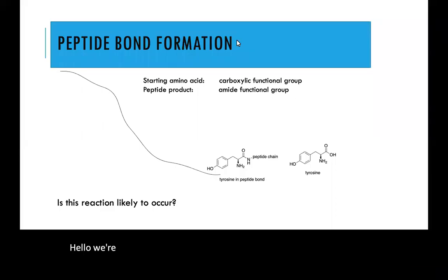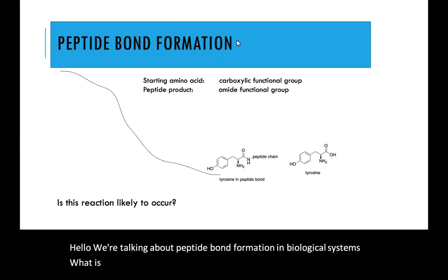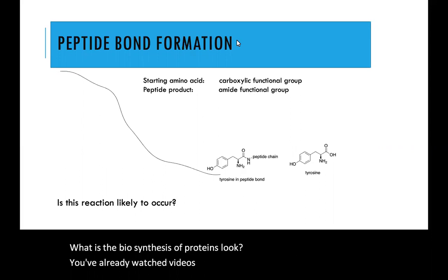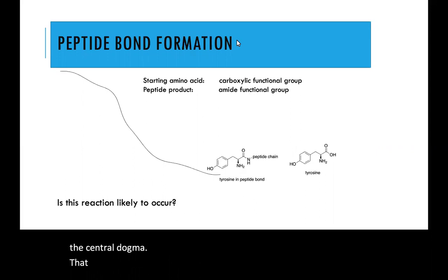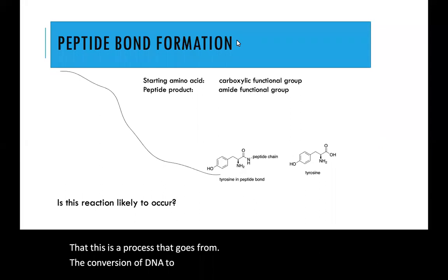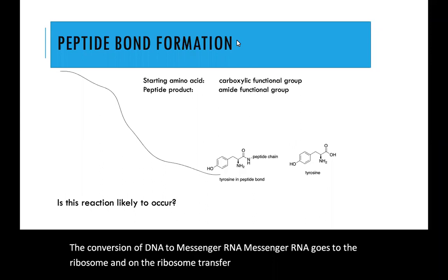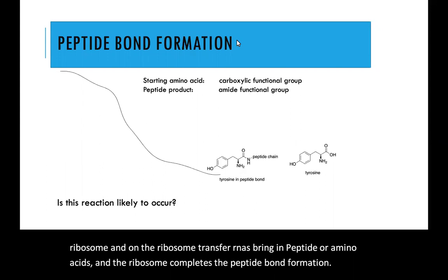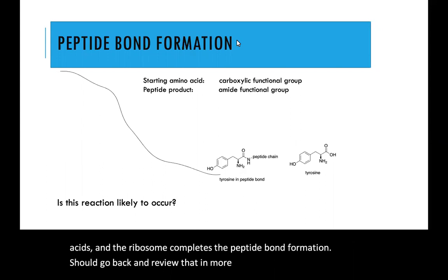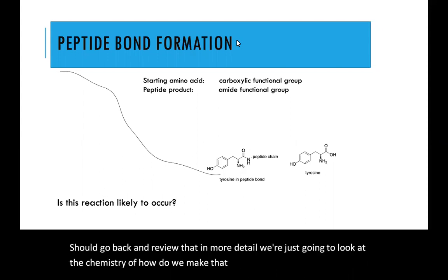Hello, we're talking about peptide bond formation in biological systems. What does the biosynthesis of proteins look like? You've already watched videos or read about the central dogma — the process that goes from the conversion of DNA to messenger RNA. Messenger RNA goes to the ribosome, where transfer RNAs bring in amino acids, and the ribosome completes the peptide bond formation. You should go back and review that in more detail. We're just going to look at the chemistry of how we make that peptide bond in the ribosomal setting.